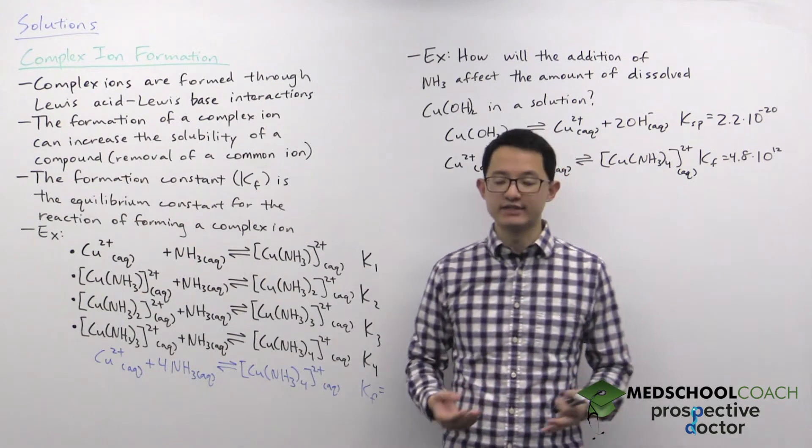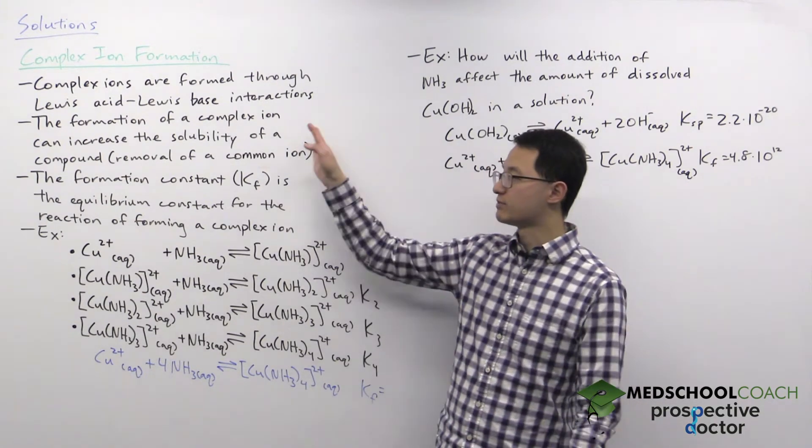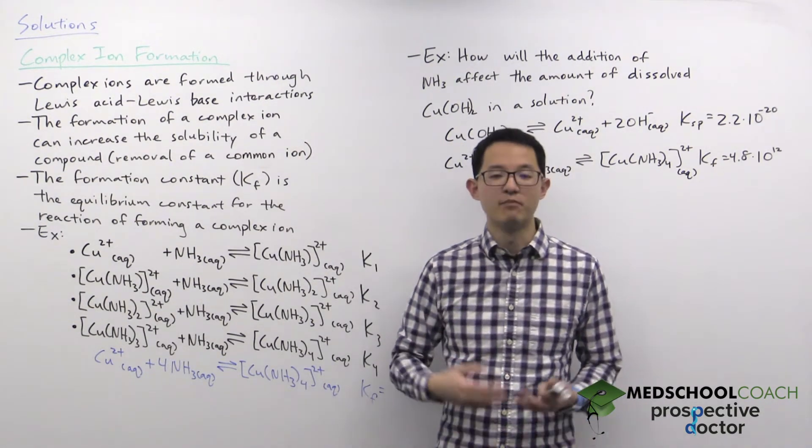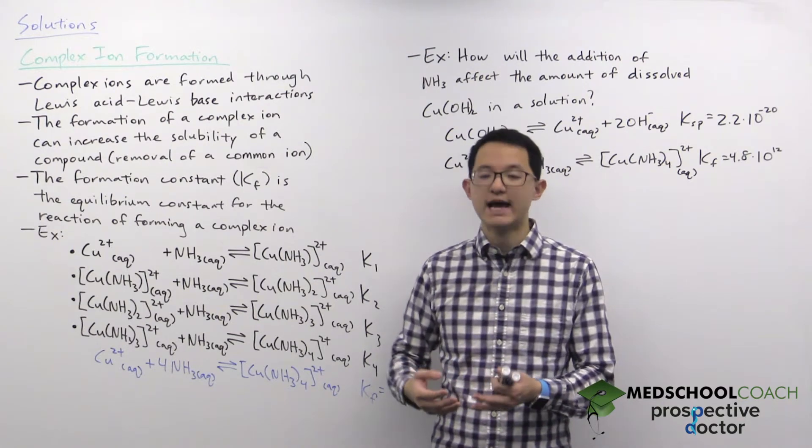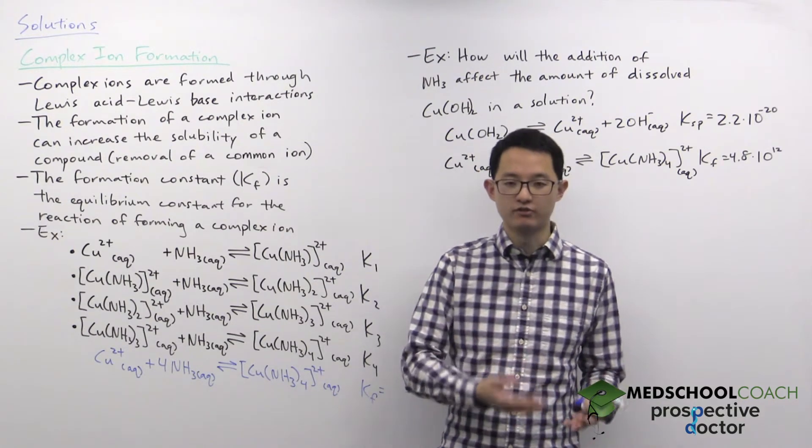Typically the Lewis acid is a metal cation and the Lewis base is a ligand, a molecule with a lone pair of electrons that can be donated to the metal cation.